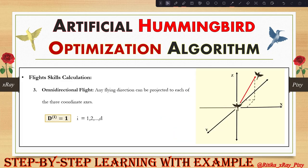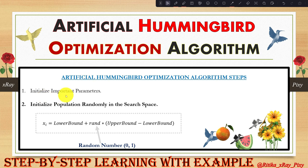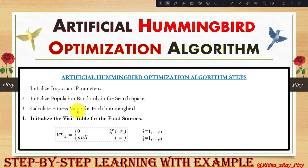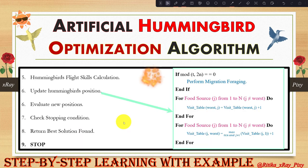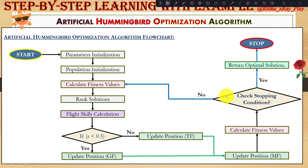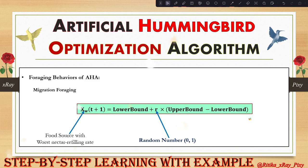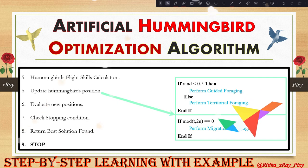To summarize the algorithm steps: initialize parameters, initialize the population randomly using the equation, calculate fitness values for each hummingbird, update the visit table, calculate flight skills, update the hummingbird positions in the search space, evaluate new positions using the fitness function, and check the stopping criteria. If met, stop and display the best solution; otherwise repeat the loop. That's all about this algorithm — if you have any questions, comment below. Thanks for watching.